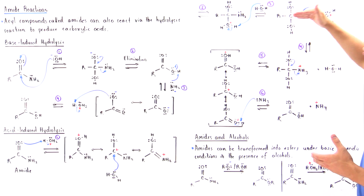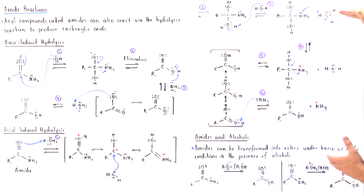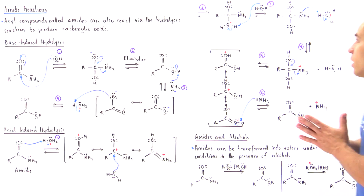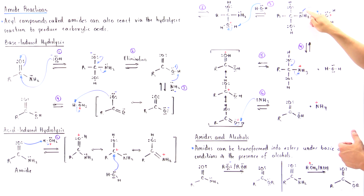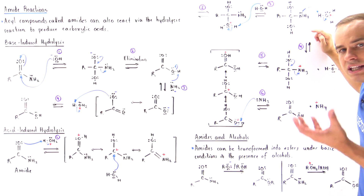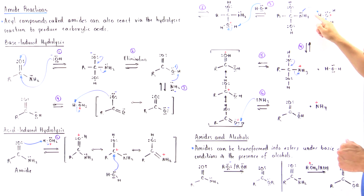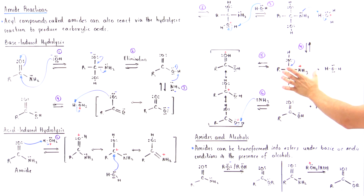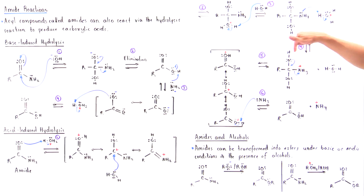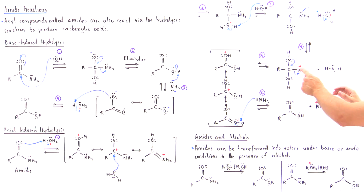In step four, the hydronium molecule formed in step three protonates the nitrogen. This is necessary because the next step involves reforming the oxygen-carbon double bond and kicking off this group as a leaving group — and under acidic conditions it is a poor leaving group. Protonating the nitrogen converts it to a good leaving group. In step five, we reform the pi bond between oxygen and carbon, kicking off the good leaving group.